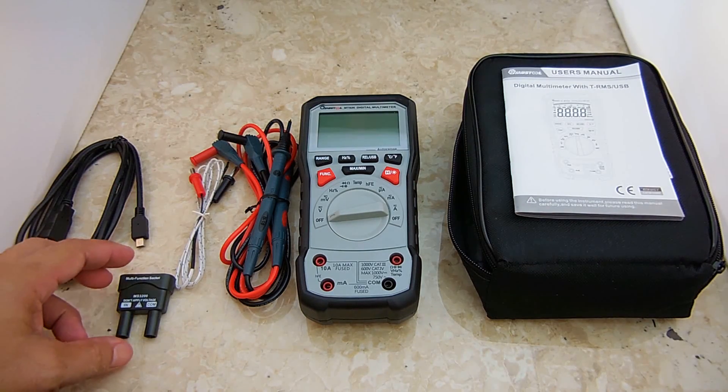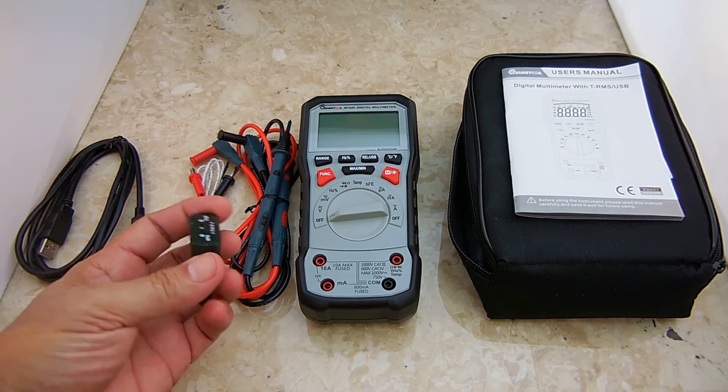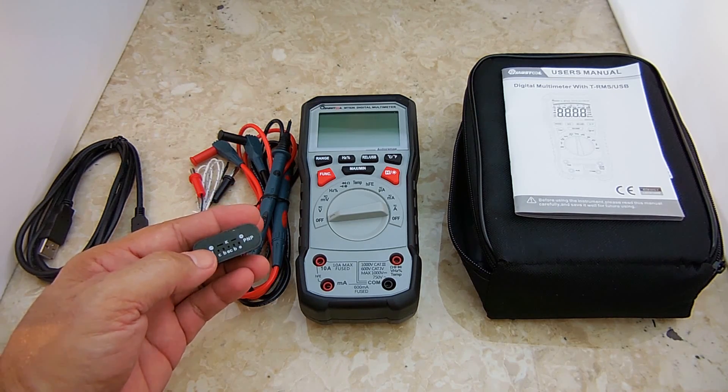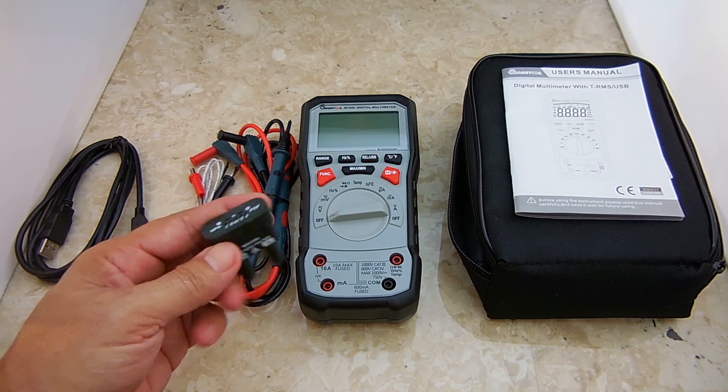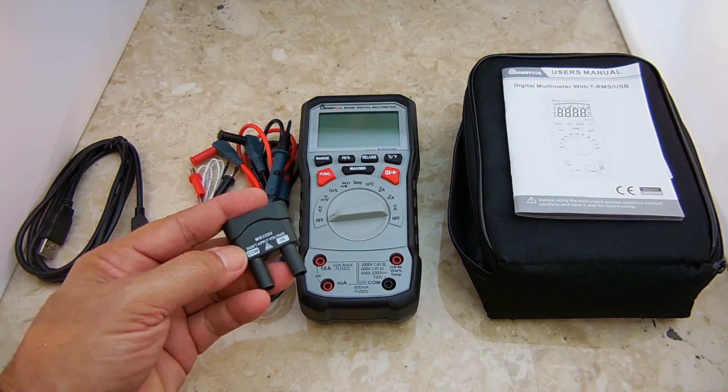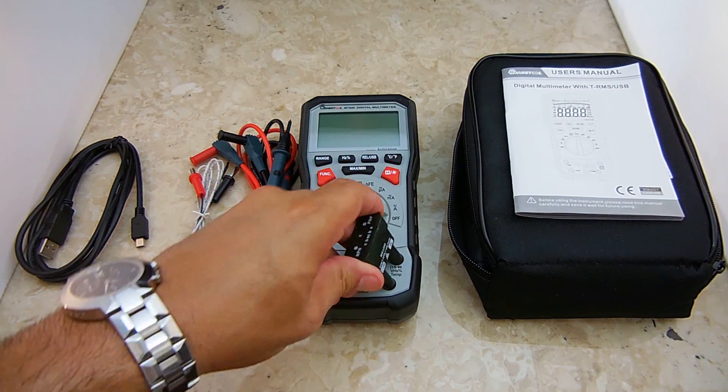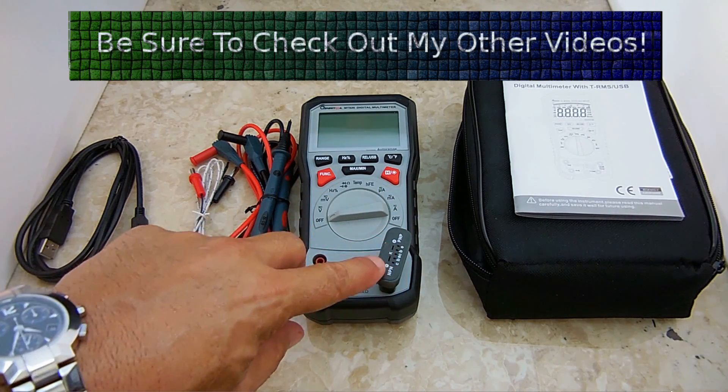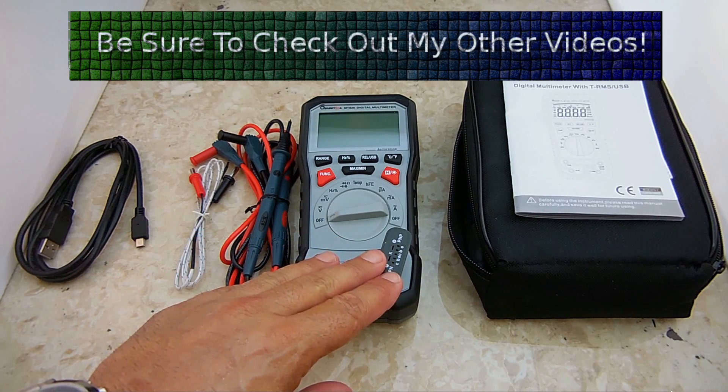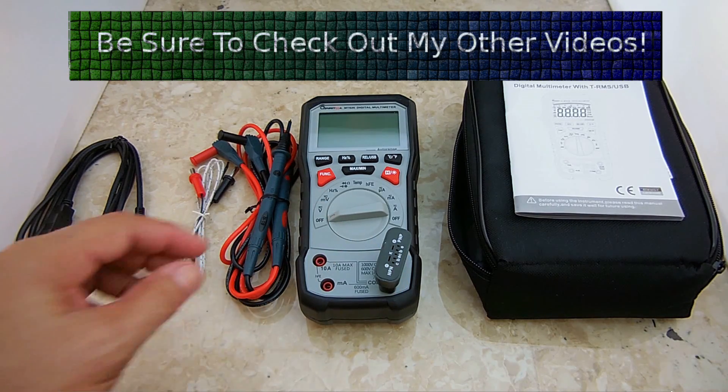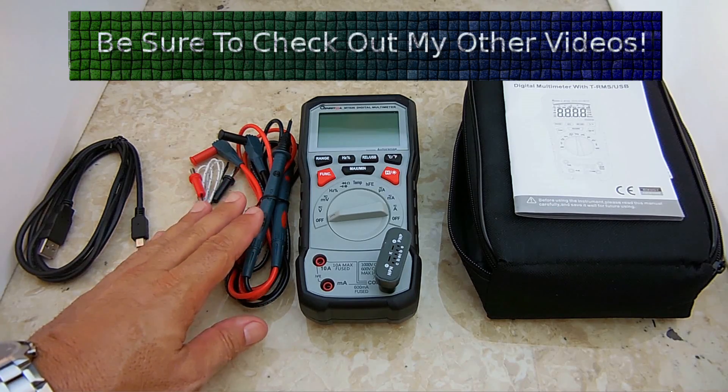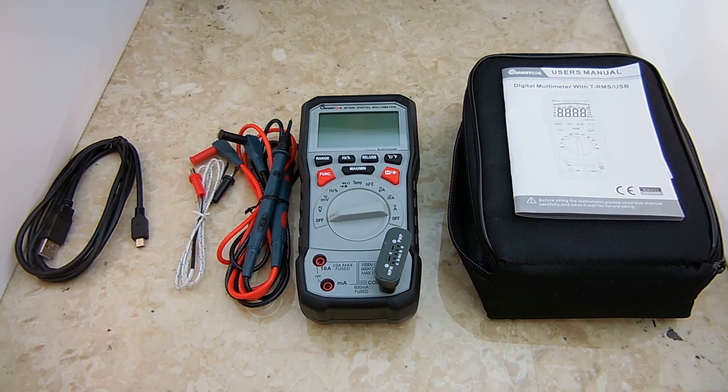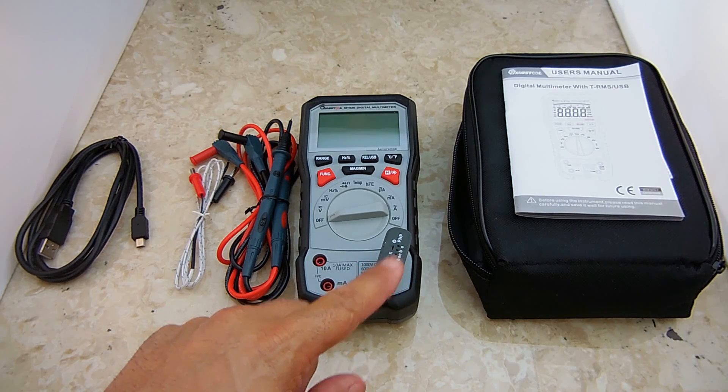You also have a multi-function socket. You could take a different thermocouple, type K, plug it directly into the socket. Negative would be on the left, positive on the right. You could plug the thermocouple into those two spots, or you can also use this for testing capacitors without using the probes, which is very nice. You could plug the leads directly in, and you can also check your resistors and diodes using this piece.